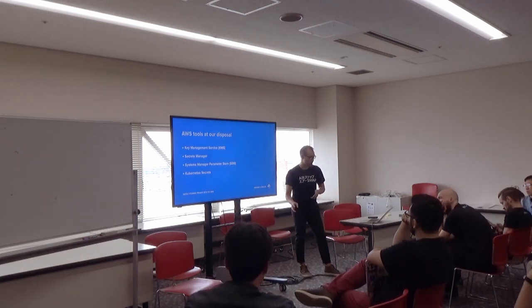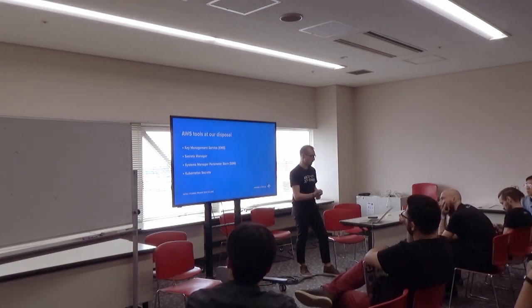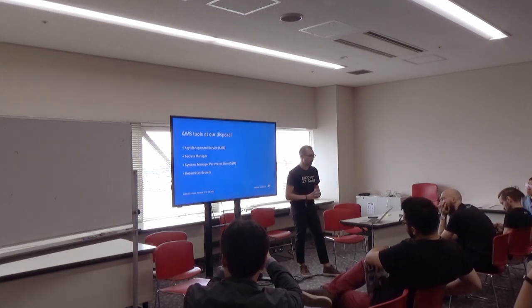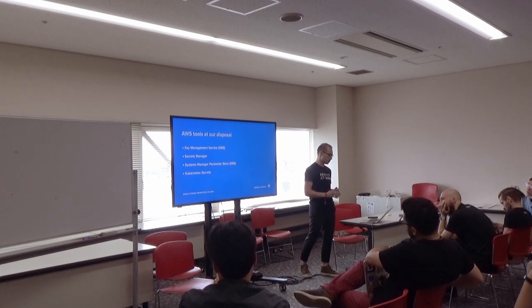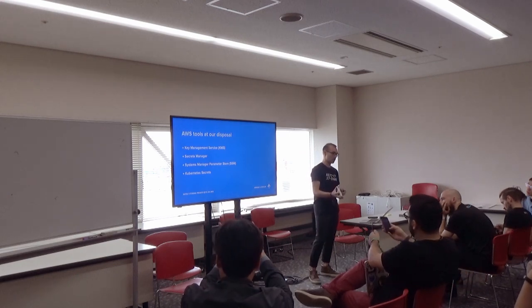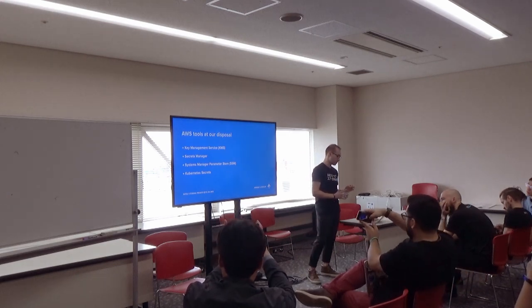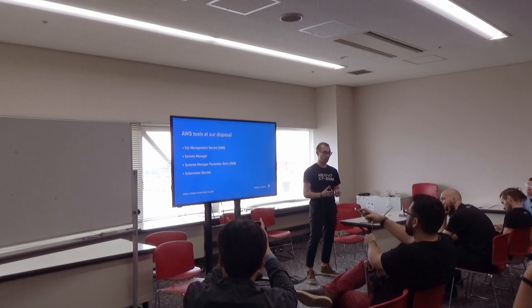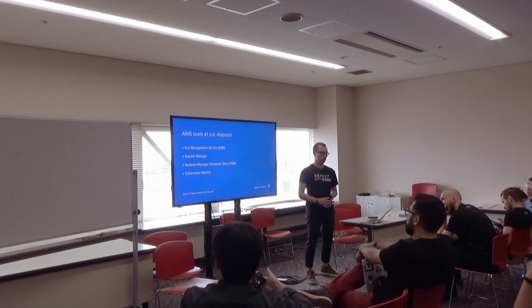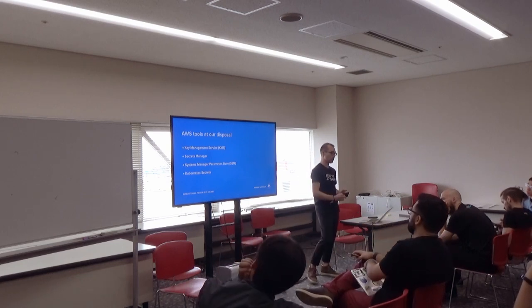We have four main tools at our disposal for AWS. The first one is Key Management Service. The second is Secrets Manager. We have the Systems Manager Parameter Store. And we have Kubernetes Secrets. I'll talk about each of these.